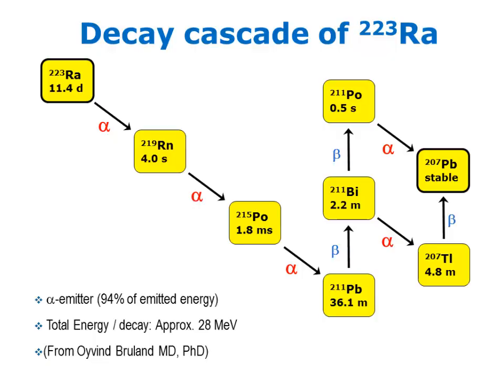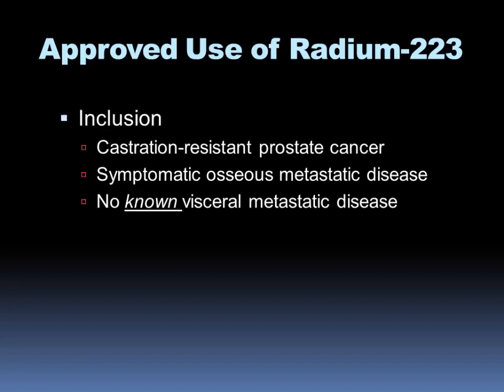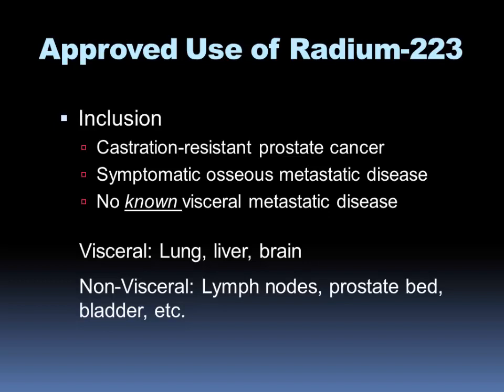Radium-223 was recently approved by the FDA for use in the United States. The inclusion criteria per the package insert are men with castration-resistant prostate carcinoma, symptomatic osseous metastatic disease, and no known visceral metastatic disease. It doesn't require a CT scan to exclude visceral disease — they just can't be known to have it. Visceral primarily means lung, liver, and brain. Nodal metastatic disease, recurrent disease in the prostate bed, or involvement of the urinary bladder wall are not contraindications to radium-223.